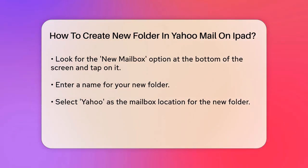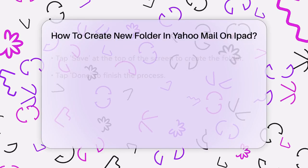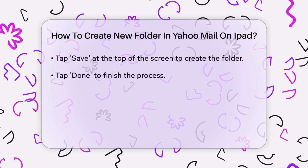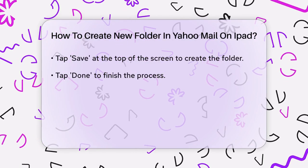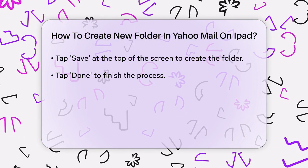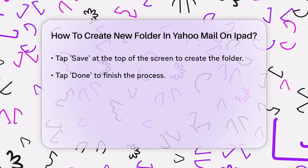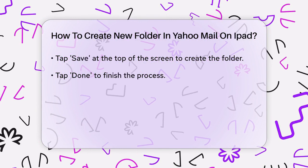Now, look for the New Mailbox option at the bottom of the screen and tap on it. This will prompt you to enter the name of your new mailbox or folder. Type in the name you want for your new folder and then select Yahoo as the mailbox location. This ensures that the new folder is created within your Yahoo email account.